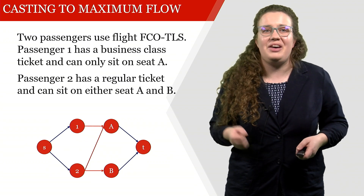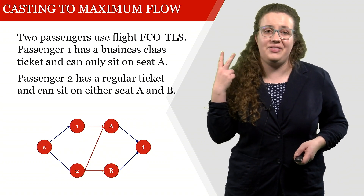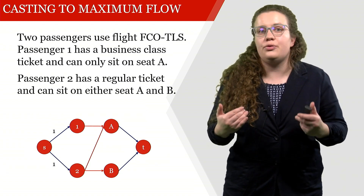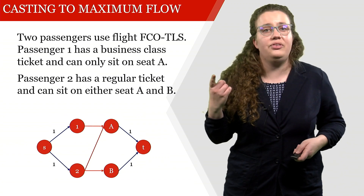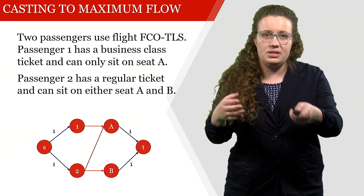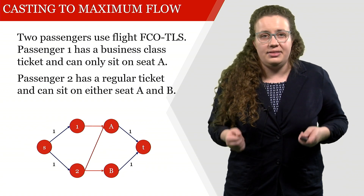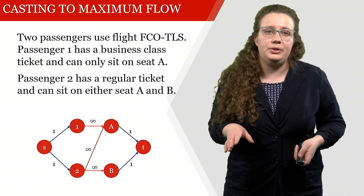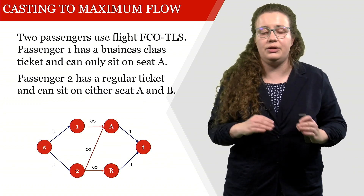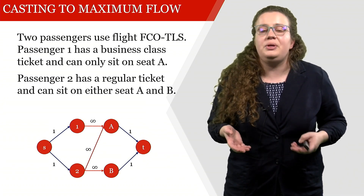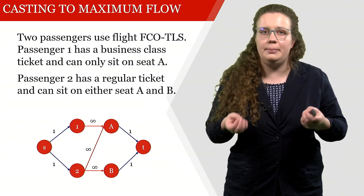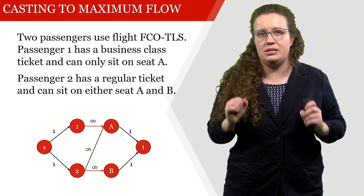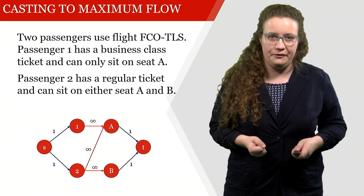We have exactly one passenger one and one passenger two, which is why we assign a capacity of one on those arcs. We also have exactly one seat A and one seat B, denoted by the one on the right-hand side. For the arcs in the middle — from one to A, two to A, and two to B — we use infinity, since those are auxiliary and we just want a sufficiently high value.